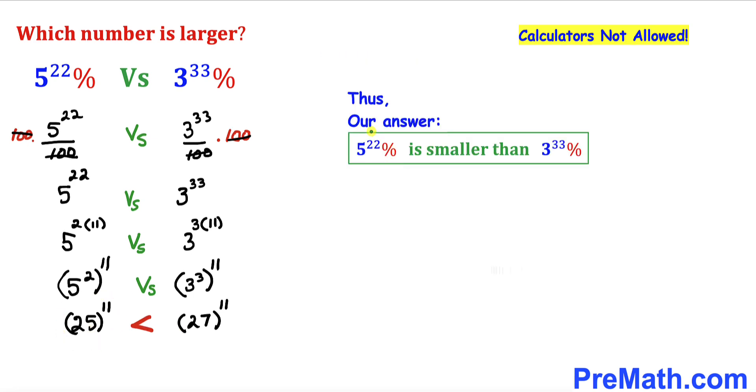Thus, we conclude that 5 to the power of 22 percent is smaller than 3 to the power of 33 percent. In other words, 3 to the power of 33 percent is larger than 5 to the power of 22 percent. Thanks for watching, and please don't forget to subscribe for more exciting videos.